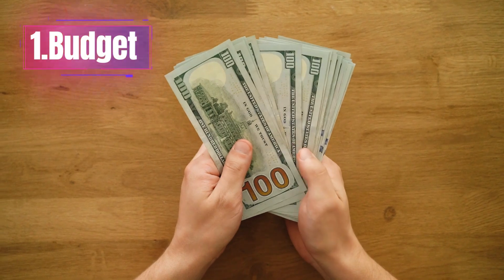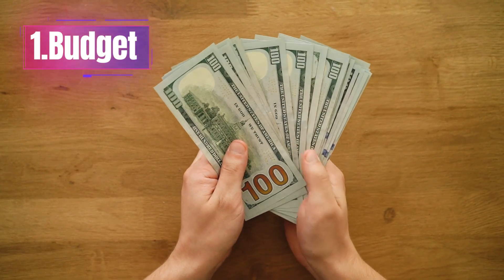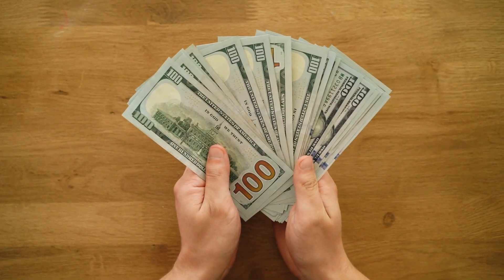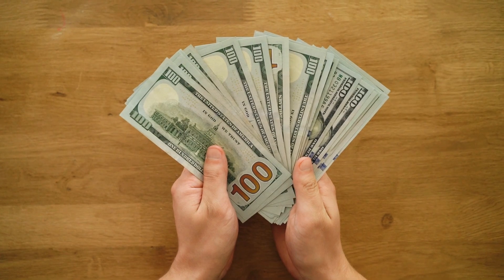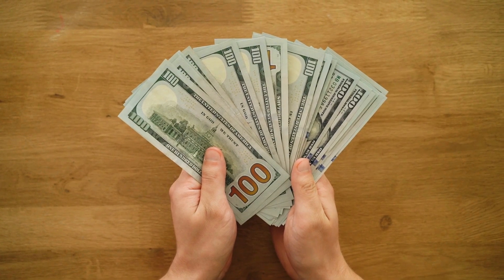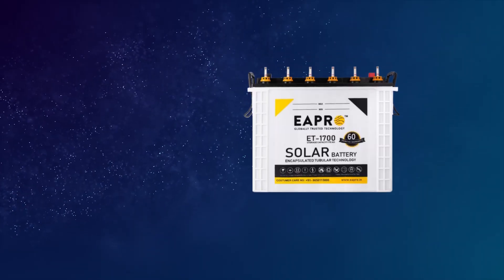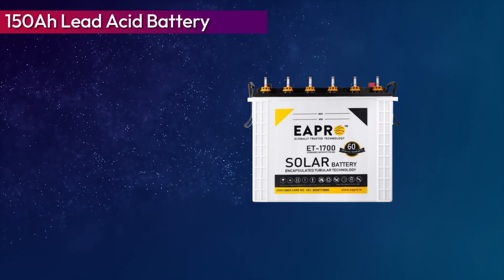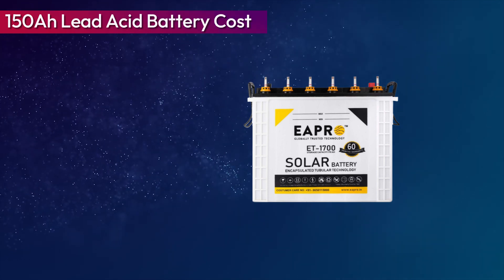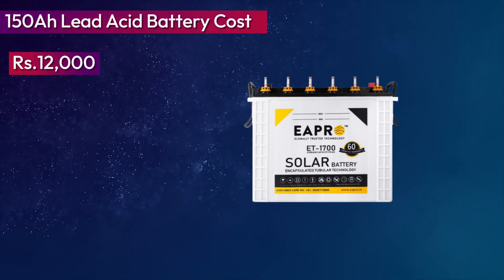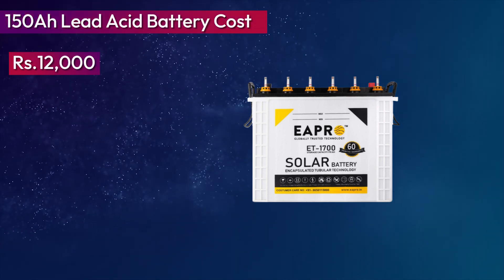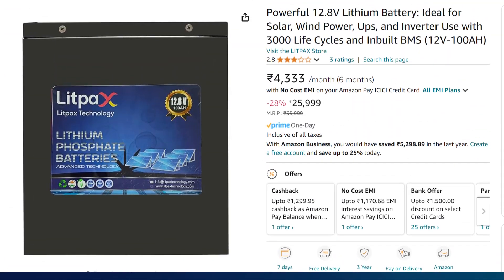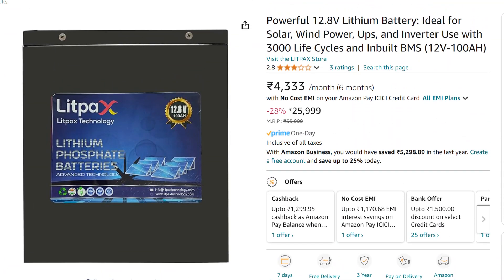The first point is your budget. Check if your budget allows you to buy a lithium battery — if your budget is good, then only you can opt for a lithium battery. For example, you can get a 150Ah lead-acid battery for around 12,000 rupees, but for similar battery backup with a lithium battery, you will need at least a 100Ah battery.